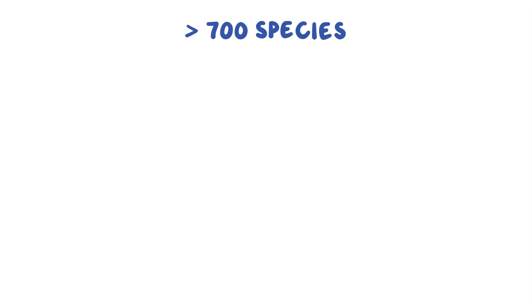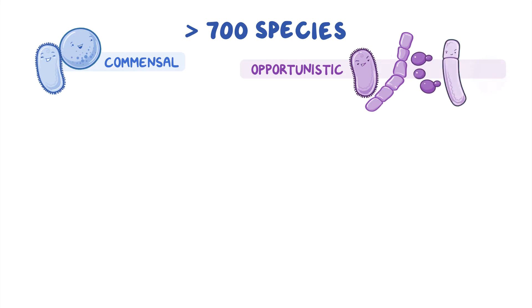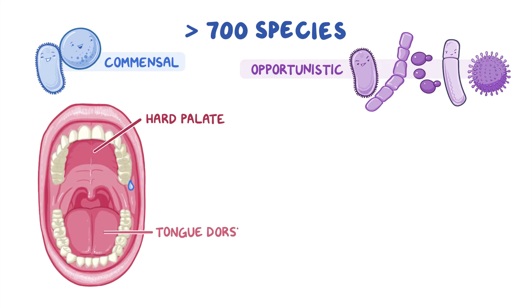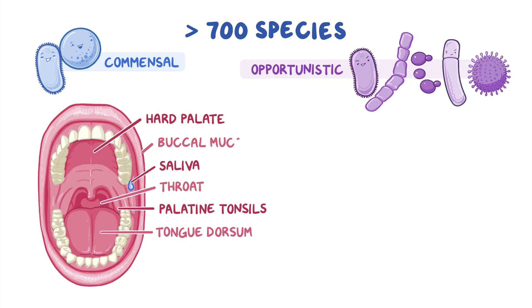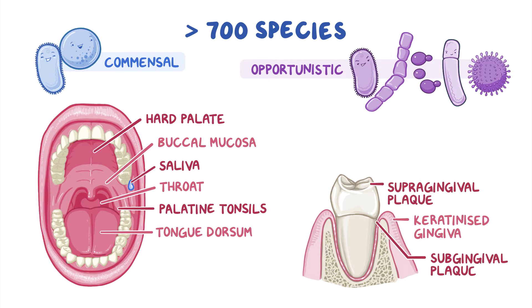The oral cavity contains over 700 microbial species as well as commensal and opportunistic bacteria, archaea, fungi, protozoa and viruses, which are organized into different microbial habitats including the hard palate, tongue dorsum, saliva, palatine tonsils, throat, buccal mucosa, keratinized gingiva, supragingival plaque, subgingival plaque, lips and even dentures.